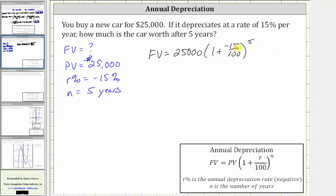Notice in the parentheses we have plus a negative. Remember, adding a negative is equivalent to subtracting a positive, and therefore let's write one plus negative 15 divided by 100 as one minus 15 divided by 100, giving us the future value is equal to 25,000 times the quantity one minus 15 divided by 100, raised to the power of five.